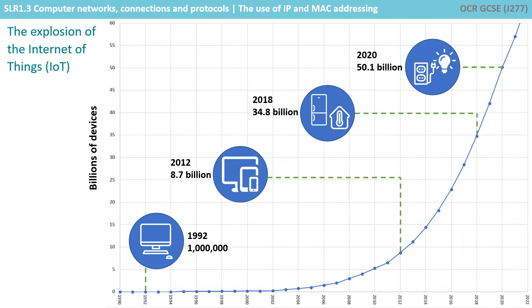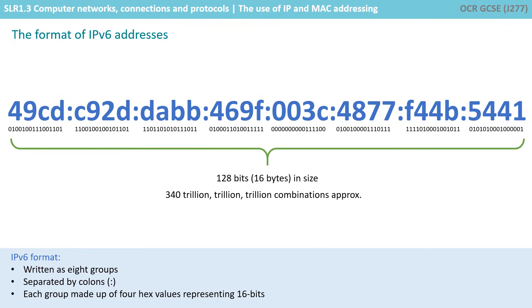Already, we have light bulbs which can be assigned IP addresses and be controlled remotely via apps on phones. The current estimation — and this video was made in 2019 — is that we will already exceed 50 billion connected devices by 2020, and the number is simply going to skyrocket. As you can see, it was identified quite early on that a replacement for IPv4 was going to be needed, and that is why IPv6 was invented.